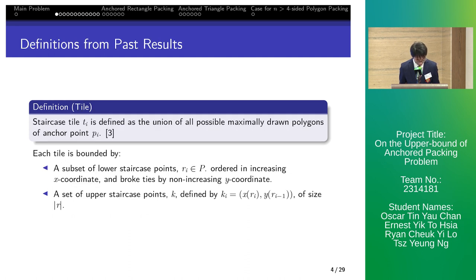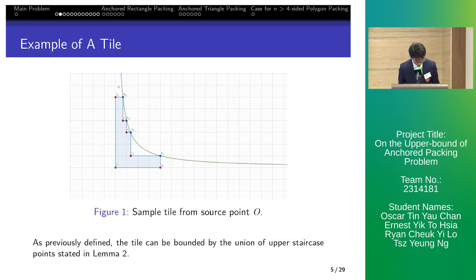Let's first define a staircase tile, TI from the union of all possible maximally drawn polygons of an anchor point. It is drawn by a set of lower staircase points R and a set of upper staircase points K. For example, this is a tile formed by the union of upper right points.